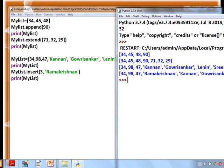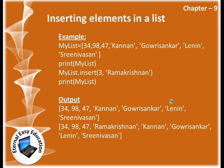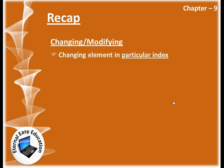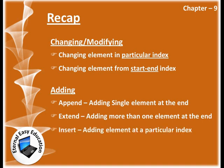So only three functions are used for adding elements to a list: append, extend, and insert. To recap - changing or modifying a list: changing element at a particular index, changing elements from a start to end index range. Adding elements: append adds a single element at the end, extend adds more than one element at the end, and insert adds an element at a particular index. Try this in your system. Thank you, have a good day.